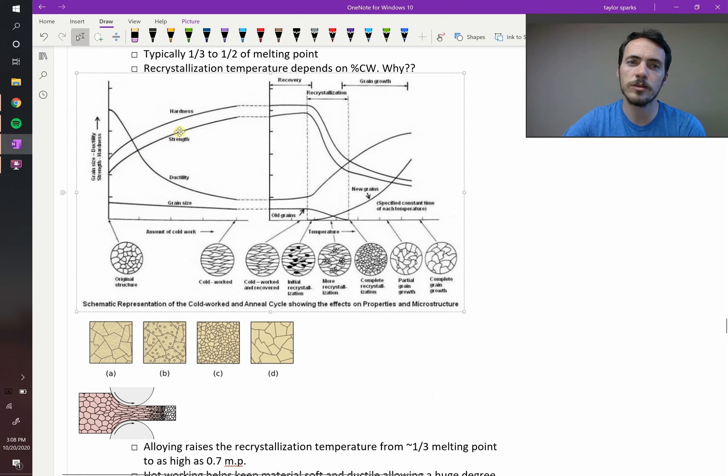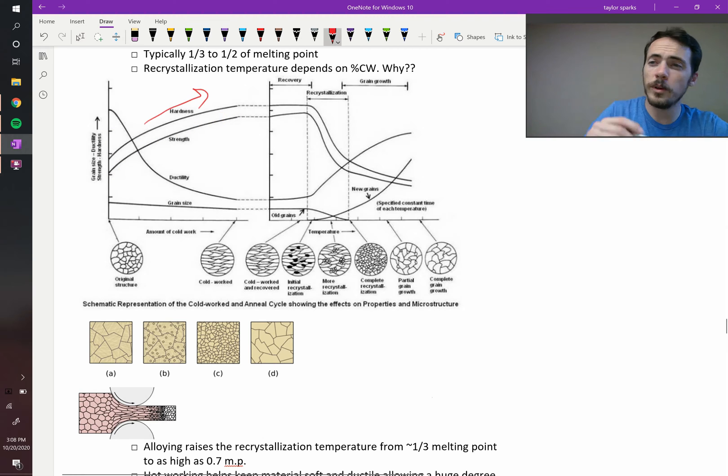You can see as you increase the amount of cold work, what's happening? Well, we know that strength goes up. It's getting harder and stronger as you cold work it. Those are both increasing up here. But we know that ductility is falling off. We're losing ductility, and we're probably changing our grain size slightly. We're probably reducing our grain size as we cold work this. Now, if you take that and you put it in an oven and you start to heat it to higher and higher temperatures, here's what you see.